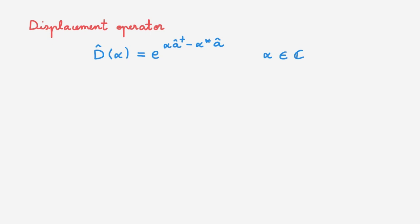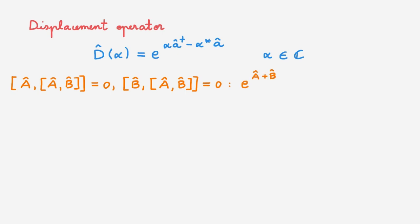From the video on functions of operators, if we have two operators A and B such that A commutes with the commutator of A and B, and B also commutes with the commutator of A and B, then we have that the exponential of A plus B equals the exponential of A times the exponential of B times the exponential of minus one-half times the commutator of A and B. This is a special case of the Baker-Campbell-Hausdorff formula.